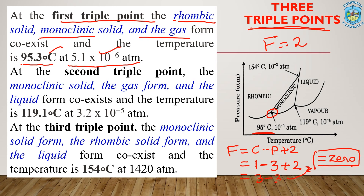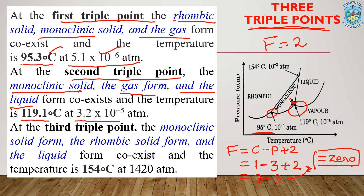The second triple point appears at a temperature of 119.1 degrees Celsius and a pressure of 3.2 × 10⁻⁵ atmosphere. At this point, the three phases that coexist are the monoclinic state (solid), the gaseous state of sulphur, and the liquid state. Applying the same rule for this point as well, we get the value of F equal to 0.